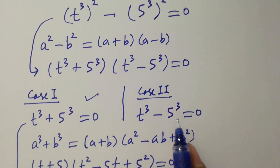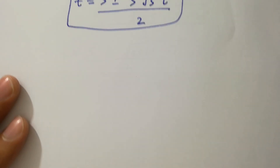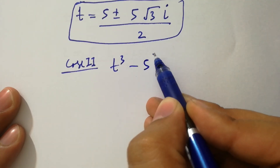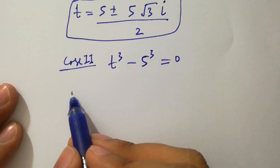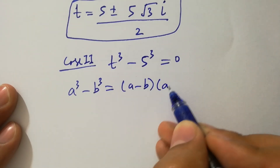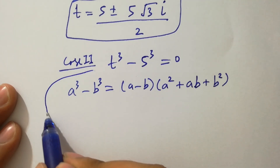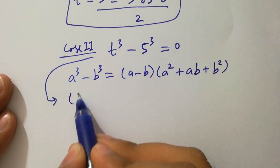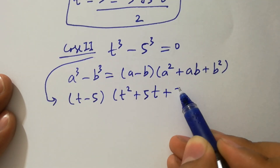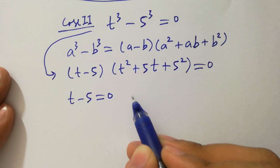Next, taking Case 2: t cubed minus 5 cubed equal to 0. We know the formula of a cubed minus b cubed, which equals a minus b times a squared plus ab plus b squared. Applying this, we have t minus 5 times t squared plus 5t plus 25 equal to 0.